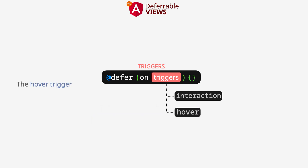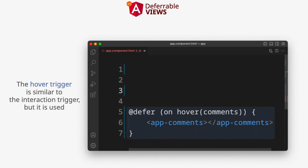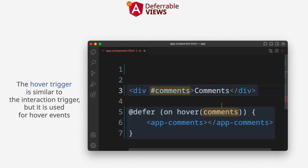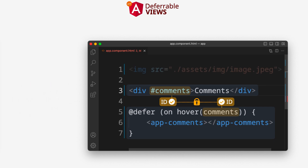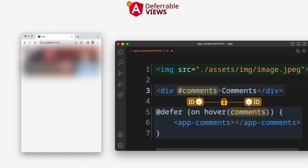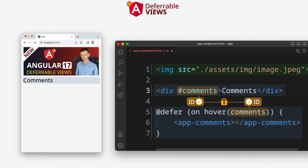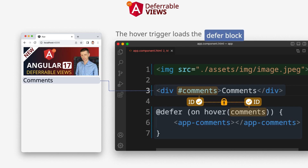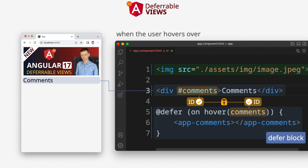The hover trigger is similar to the interaction trigger, but it's used for hover events. The hover trigger loads the defer block when the user hovers over the target block.